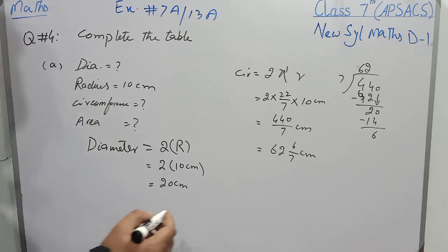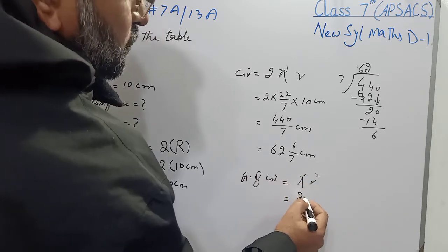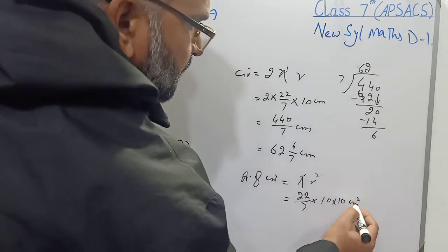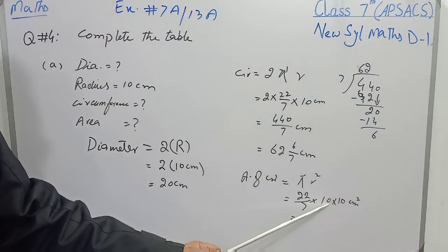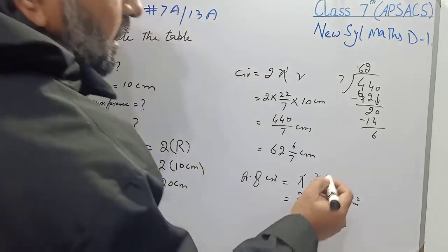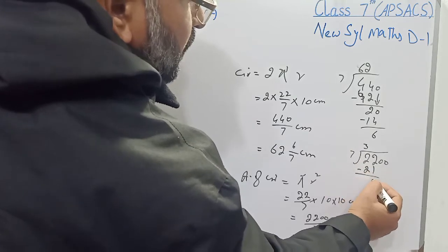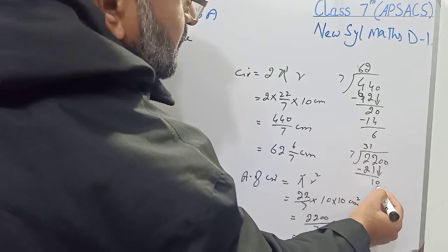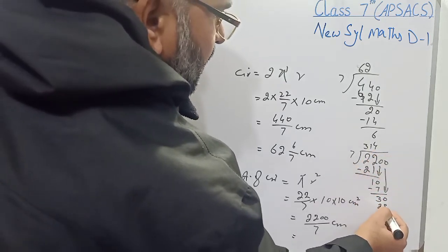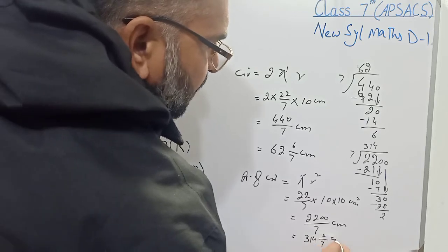Now we have to find the area of the circle. Area of circle is πR². The value of π is 22/7 and R is 10. So: (22/7) × 10 × 10 = 2200/7 cm². Dividing 2200 by 7 gives us 314 and 2/7 cm². That is the first part of question number 4.